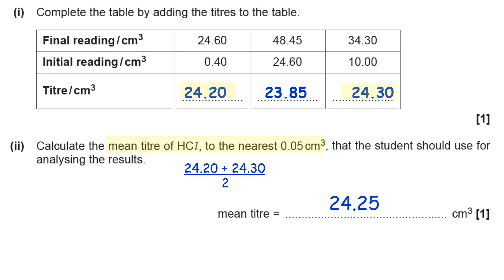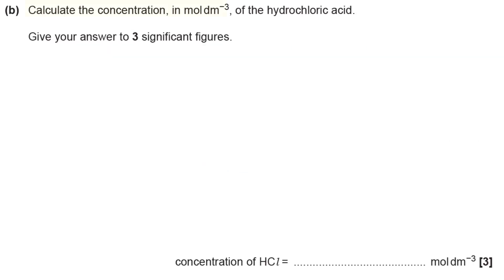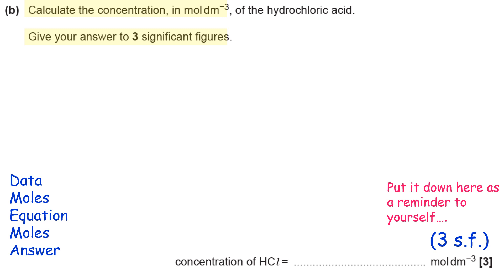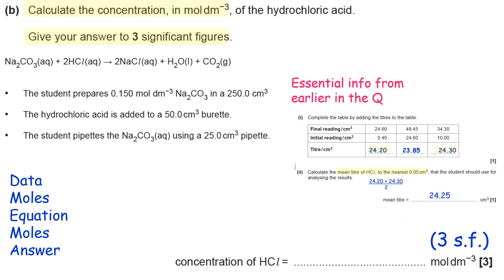The next part is calculating the concentration. They want your answer to three significant figures, so whenever I see this I advise people to just put 3 s.f. down at the bottom next to the answer line - it's just a reminder to yourself so you don't forget it. Because you're working out a concentration and you're going to need to use moles, I always use the data-moles-equation-moles-answer technique. I'm going to collect all the things that I need from earlier in the question including my own calculation of 24.25. If I rewrite the equation across the top and highlight it, I can put the information that I have for each of the reactants underneath them. For sodium carbonate I have 25 cm³ as the volume and concentration is 0.150 mol dm⁻³. For hydrochloric acid I only at this point know it's 24.25 cm³, but they want you to work out the concentration.